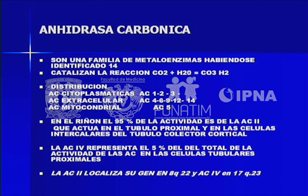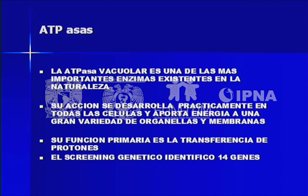Los intercambiadores cloro-bicarbonato son importantes en el tema de acidosis tubular, de los cuales van a existir 3 conocidos. El papel quizás más trascendente en la acidificación urinaria lo va a dar la anhidrasa carbónica, de la cual se han identificado hasta ahora 14 tipos. El 95% de la actividad renal es la anhidrasa carbónica 2, que actúa en el túbulo proximal y en las células intercaladas. Las ATPasas son la fuente de energía y vamos a ver la importancia que tienen en este tema.